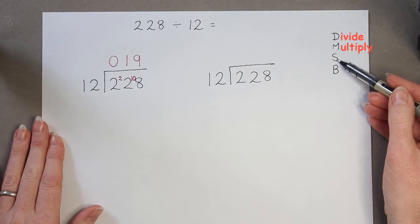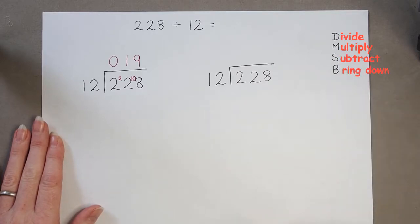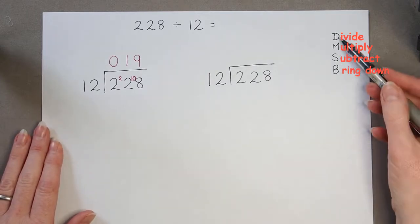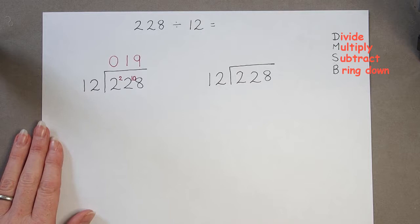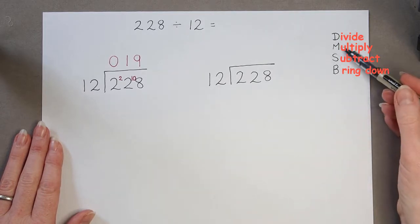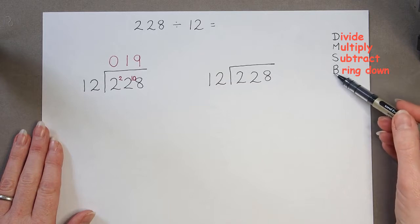Divide, multiply, subtract, and bring down. That's what they stand for, but we'll see that as we go through. So we need a way to remember it, and one way which I've heard used, which sticks in the brain quite easily, is does McDonald's sell burgers?